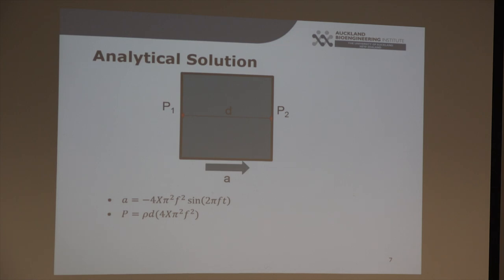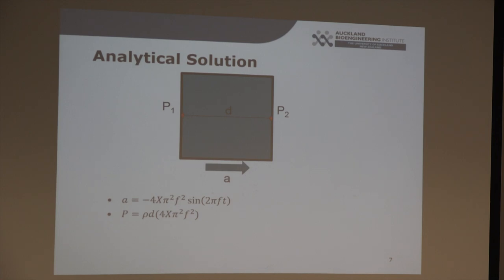Alongside these phantom models, an analytical solution was also derived for the pressure experienced inside the gel for a linear shake. The final pressure equation is very similar to the hydrostatic pressure equation ρgh, where ρ is density. The D term represents the distance between the two points relative to the centre. The acceleration term is the maximum acceleration from sinusoidal displacement differentiated twice. From that equation you can see a square relationship with frequency F, and a linear relationship with displacement X.